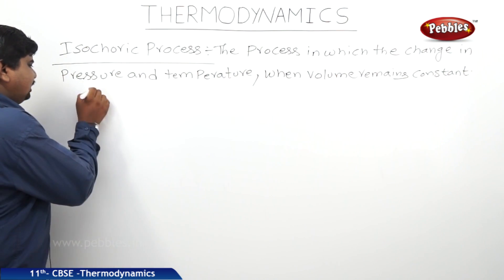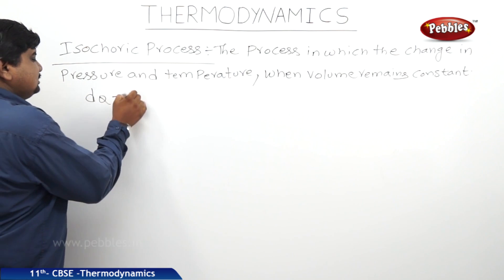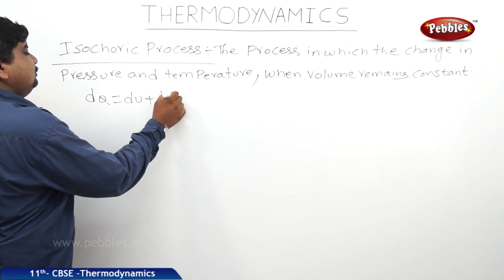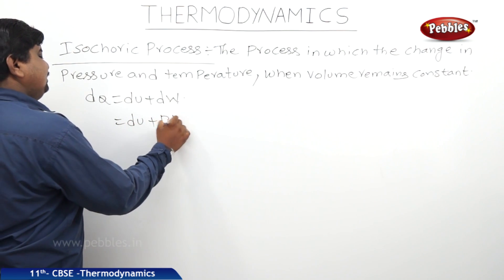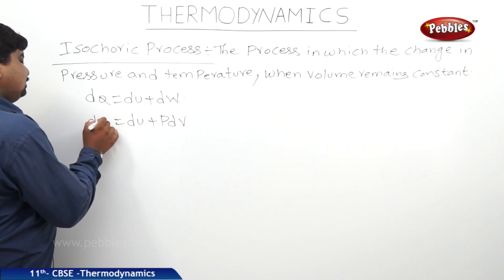According to the first law of thermodynamics, dQ is equal to dU plus dW, and this can be written as dU plus PdV equals dQ.